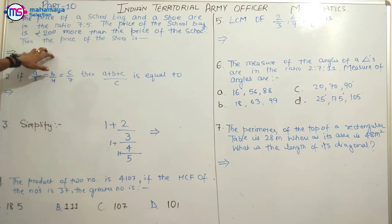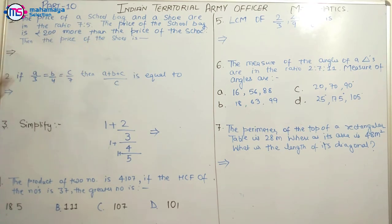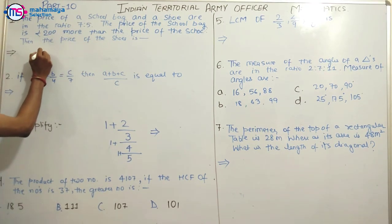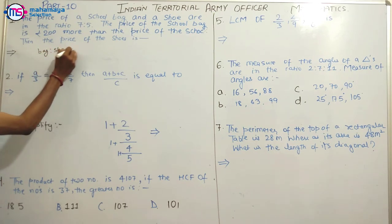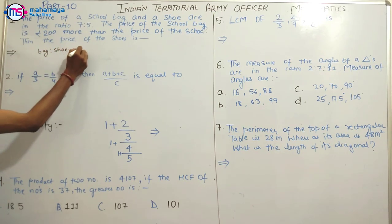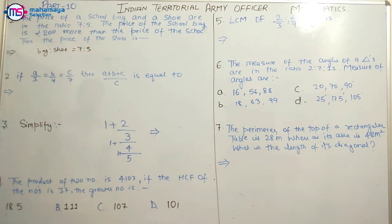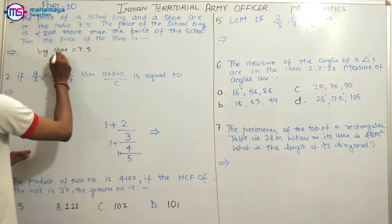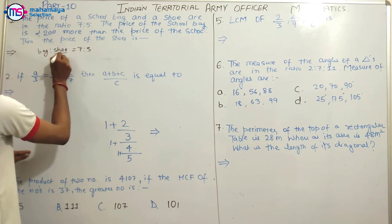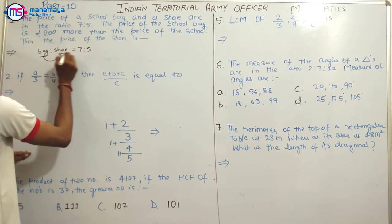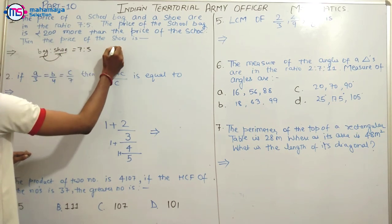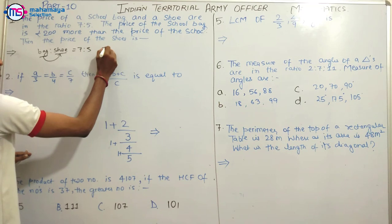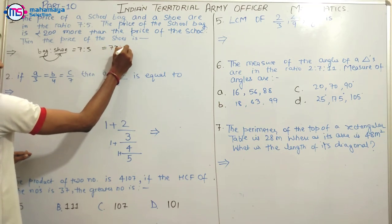The first question is: the price of the school bag and the shoe are in the ratio 7 is to 5. The price of the school bag is at least 200 more than the price of the shoe. If we let the prices be 7x and 5x respectively...